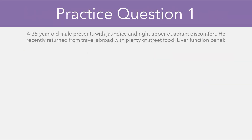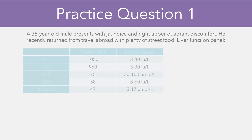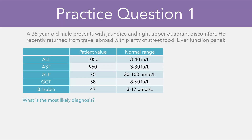To cement our understanding of LFTs, let's take a look at a few practice questions. In this case, we have a 35-year-old male who presents with jaundice and right upper quadrant discomfort. He recently returned from travel abroad with plenty of street food. We have our liver function panel here — and we can see that we have quite a high rise in our ALT and AST values, with an additional rise in the bilirubin.